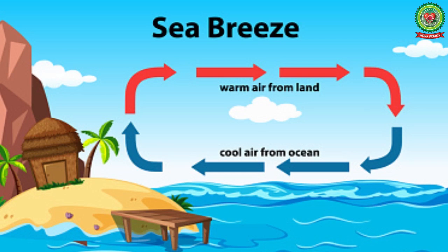During the day, the sun is shining brightly and due to the sun's heat, the land heats up faster than the water in the sea. As the land heats up, the air above the land also heats up and becomes lighter. As we have discussed, hot air being lighter rises up. The air above the sea is cooler than the land, and this cool air moves towards the land to take the place of the hot air which has moved up.